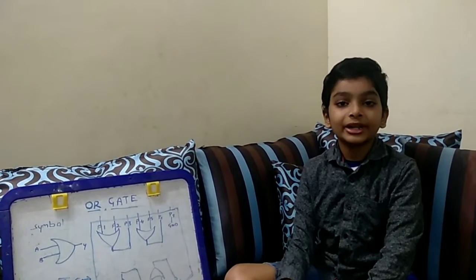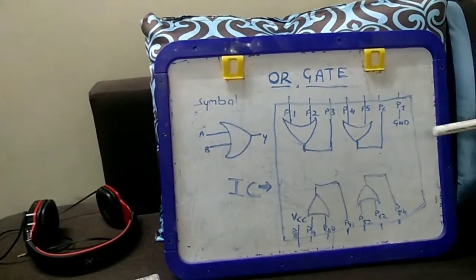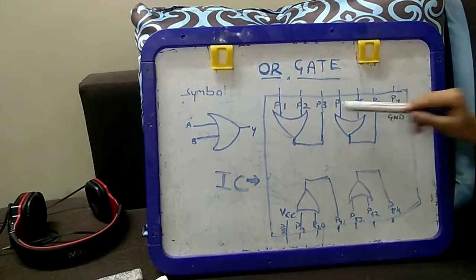Today I am going to practically implement OR gate. This is the OR gate symbol and this is the OR gate IC and it has 14 pins.